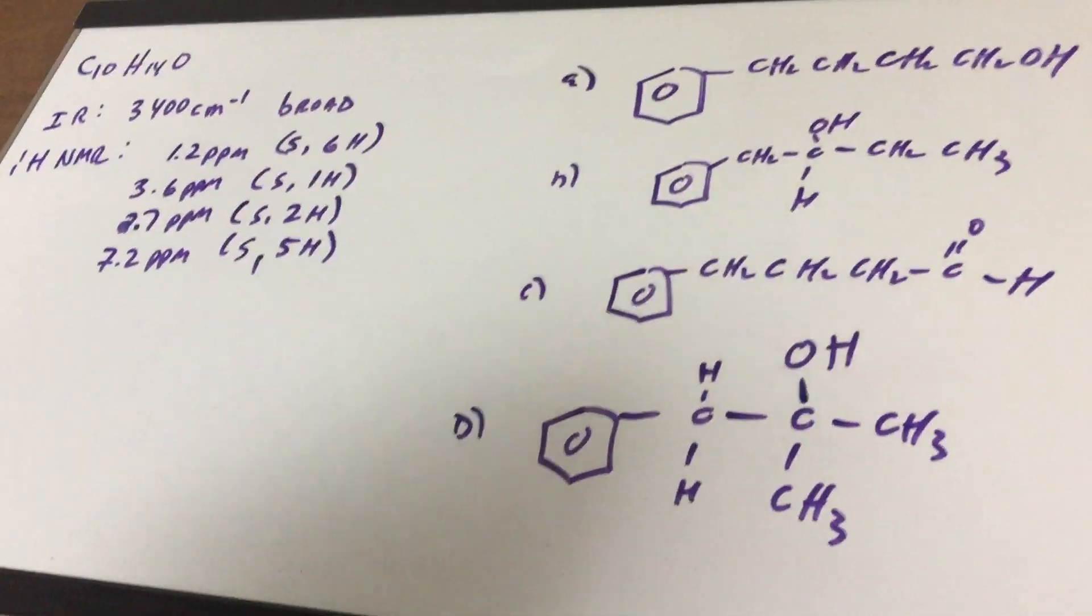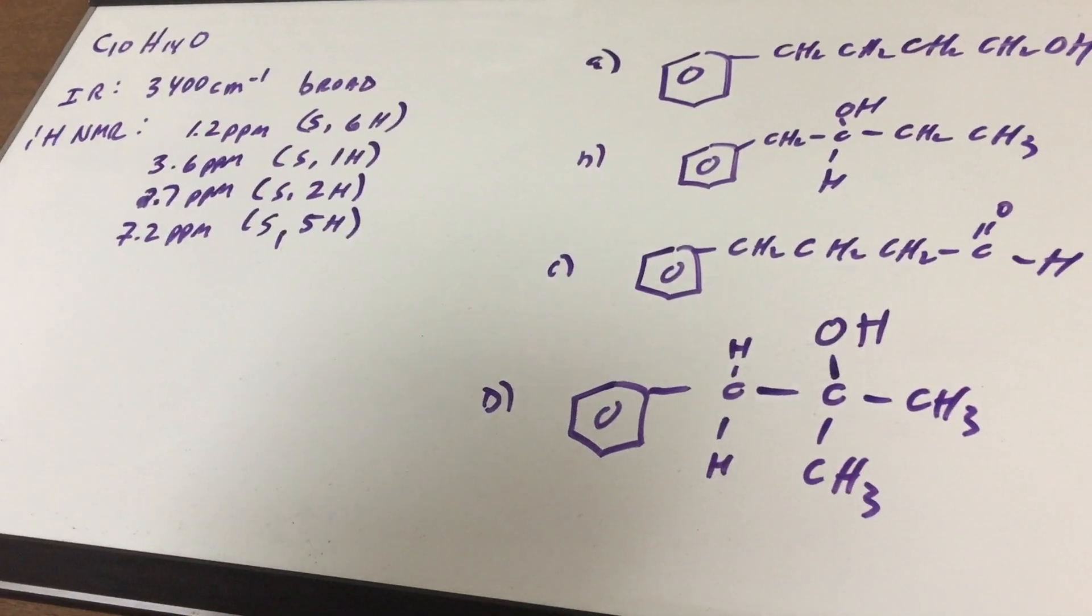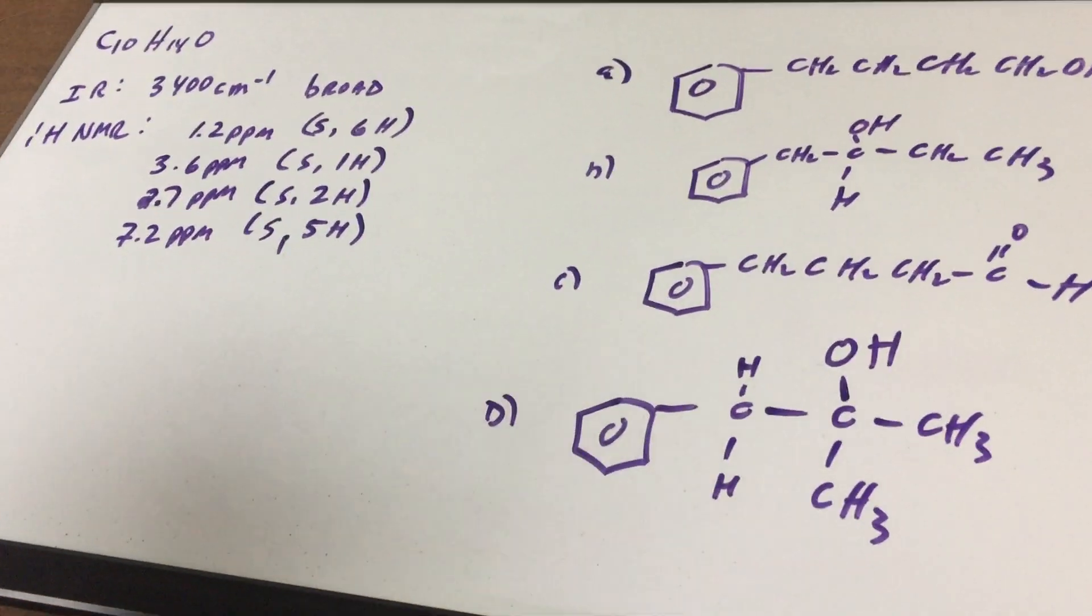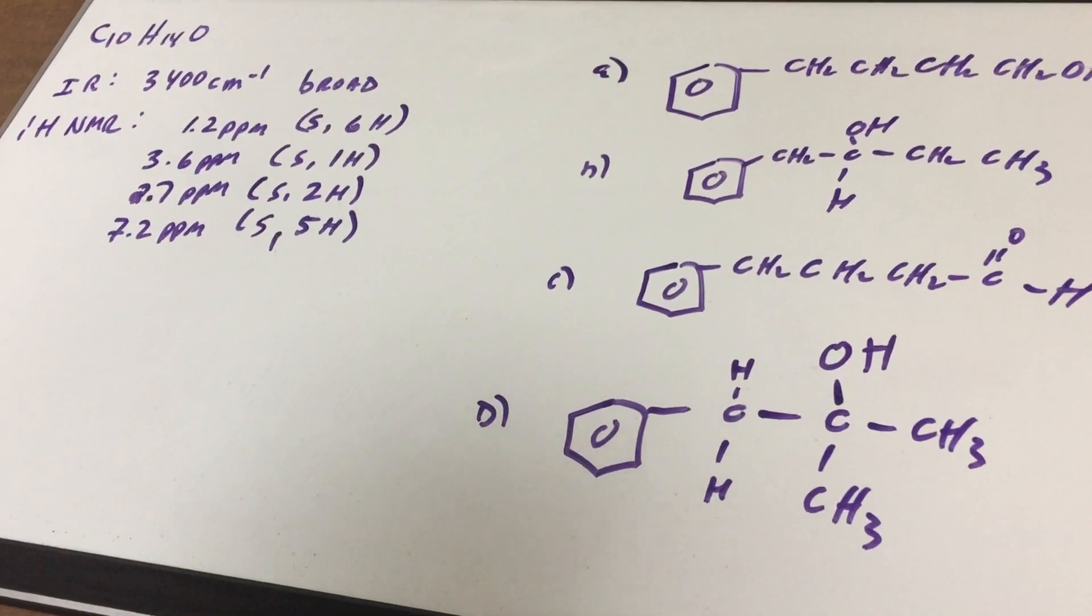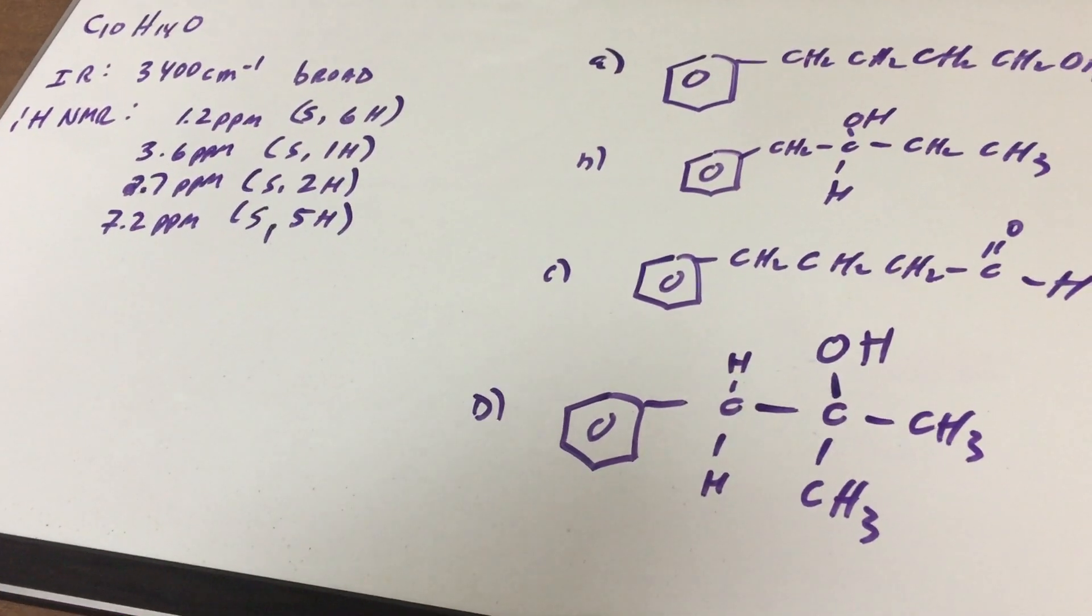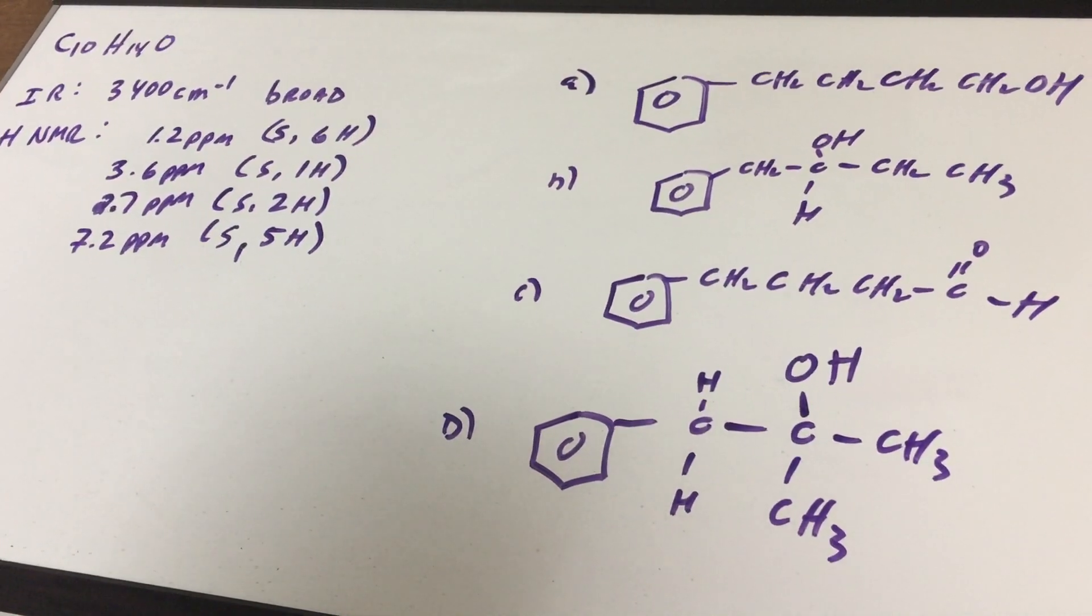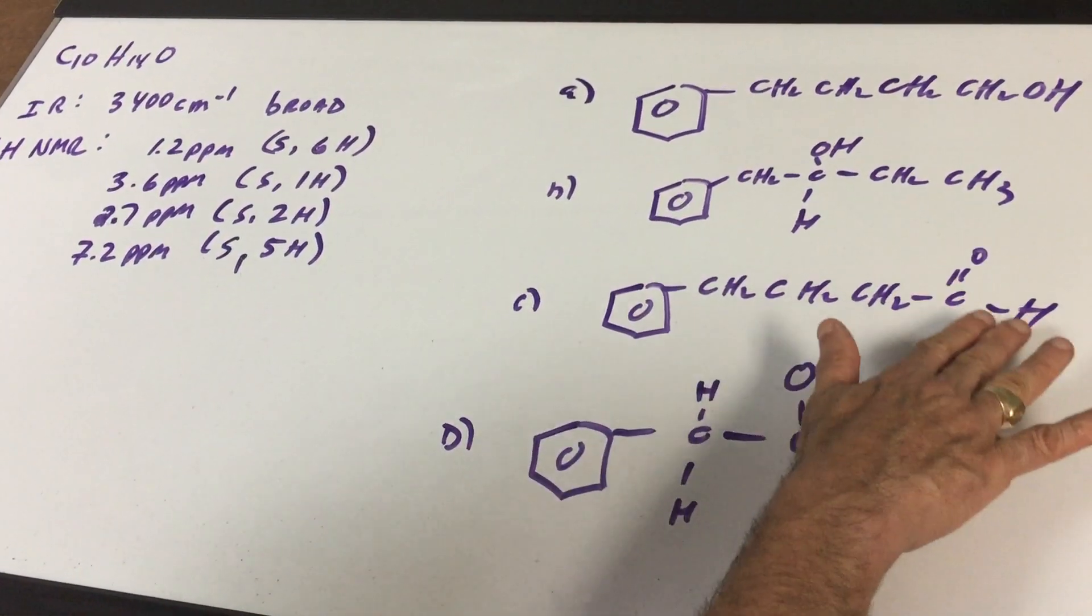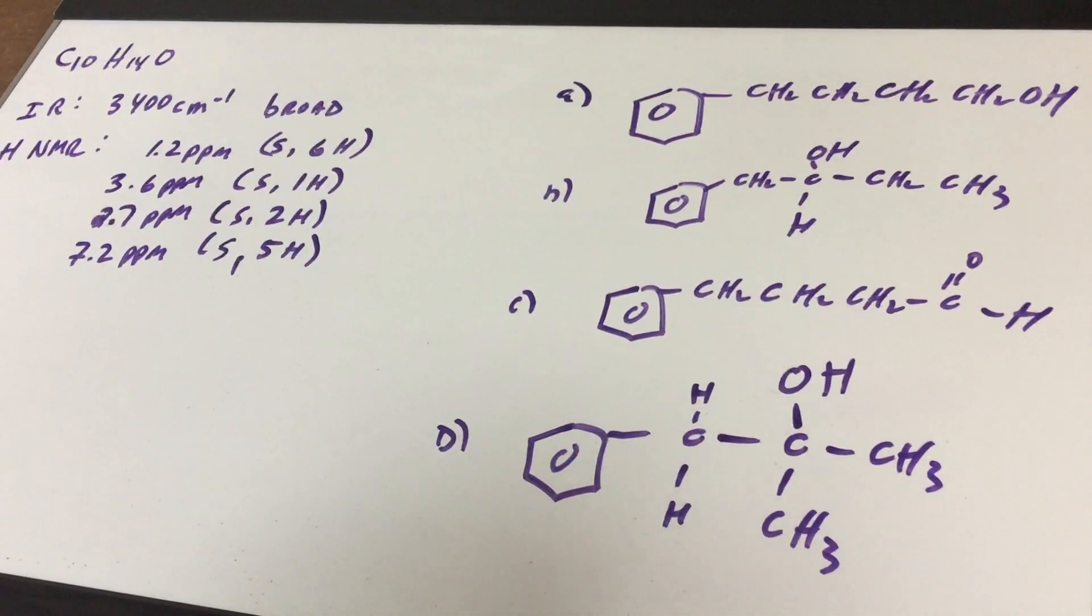Say for instance this represented a DAT question and I said to you we have a C10H14O and I gave you this information and it says the IR is 3400 and it's broad. Right off the bat that tells me that it's most likely going to be an alcohol group. So I look at all these choices, well I see most of them are alcohols but this one isn't. So I'm very suspect that this one can be eliminated.